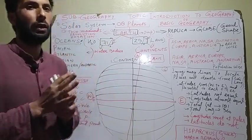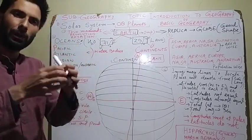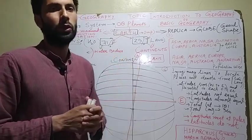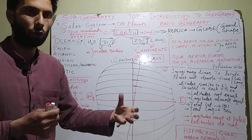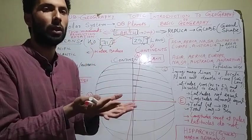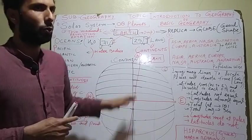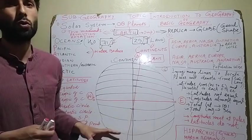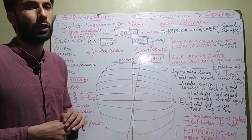Now, how do we study the Earth? What instrument do we have? We have an instrument called the globe. The globe is called the replica of Earth — it is considered almost exactly like the Earth. So when we study the Earth, we don't go to particular places; instead we study the globe. Through the globe we get a lot of information, and we study all the continents through it.